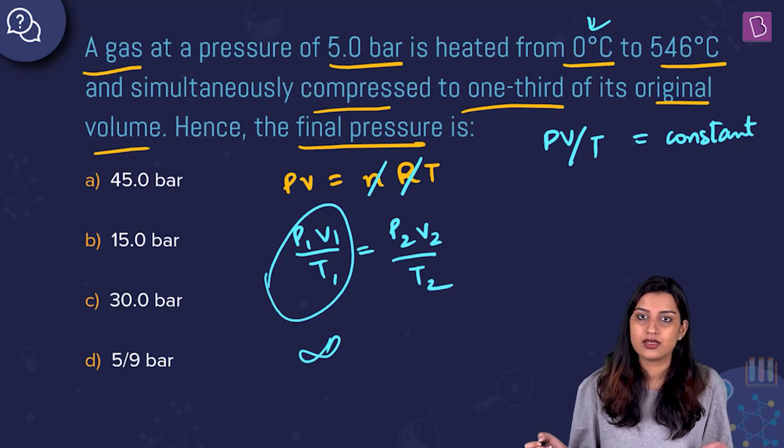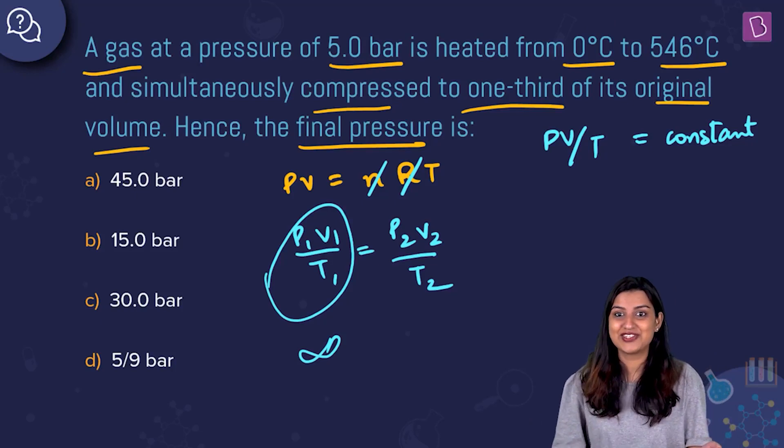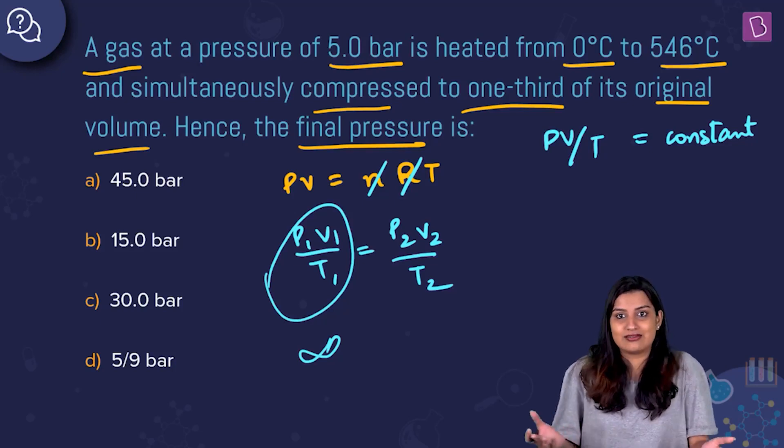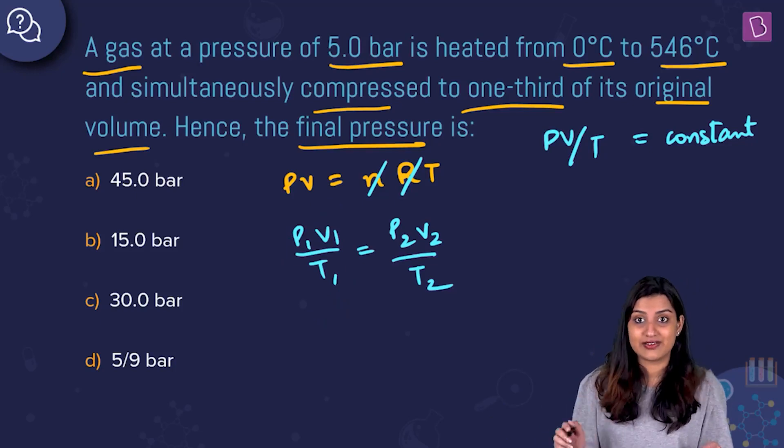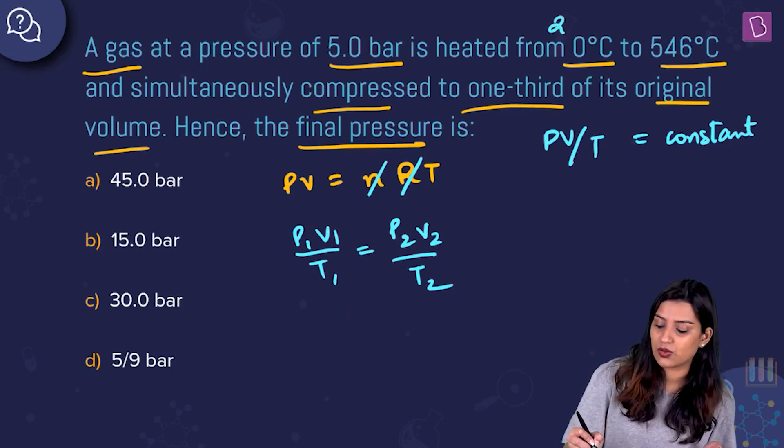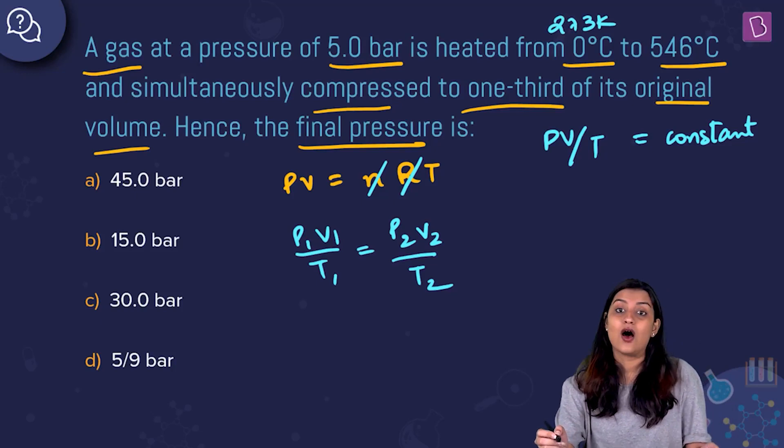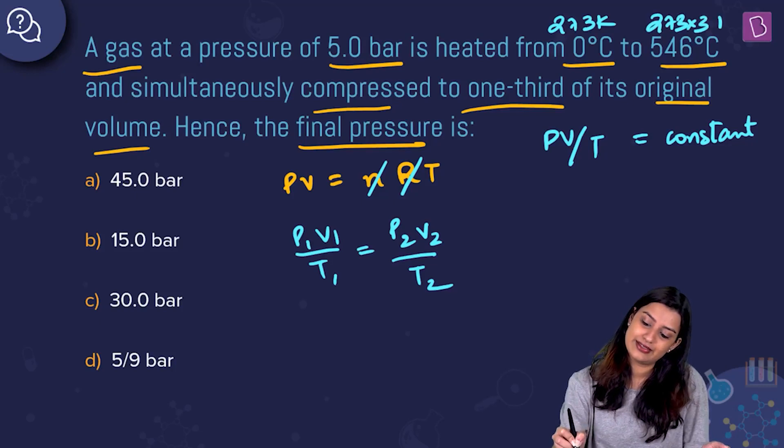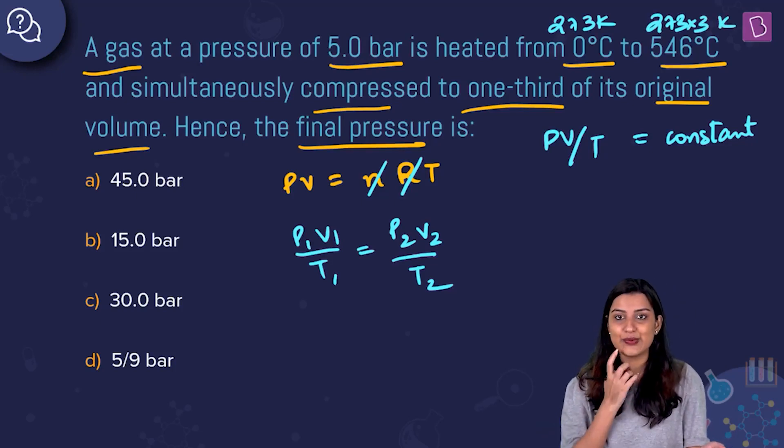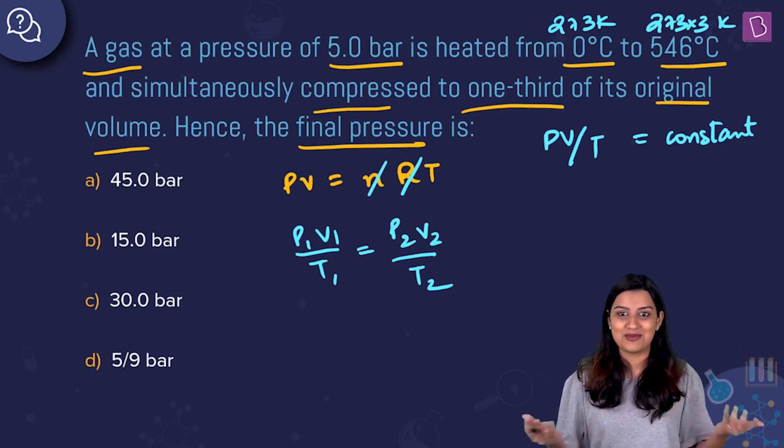T1 is given as zero degrees Celsius. We have to convert it to Kelvin. Temperature has to be in Kelvin, be very sure of that. This is going to be 273 Kelvin. T2 is going to be 273 plus 546, or alternatively, because I know I have to cancel things out, I'm going to write this as 273 into 3 Kelvin, same value numerically, just trying to make our life easier and reduce calculations.